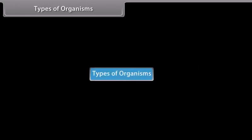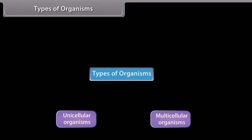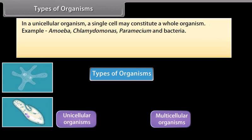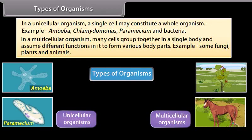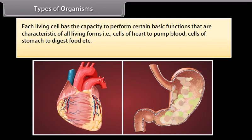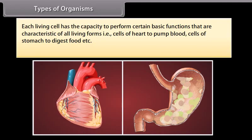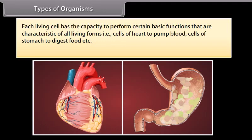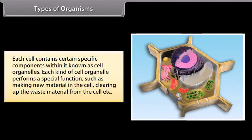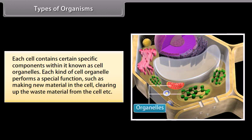Types of organisms: In unicellular organisms, a single cell constitutes a whole organism — examples include amoeba, chlamydomonas, paramecium, and bacteria. In multicellular organisms, many cells group together and assume different functions to form various body parts — examples include some fungi, plants, and animals. Each living cell has the capacity to perform certain basic functions, such as cells of the heart pumping blood and cells of the stomach digesting food. Each cell contains specific components known as cell organelles.